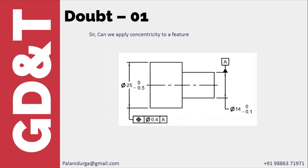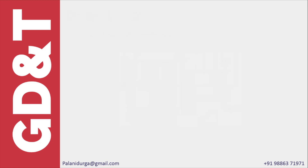The advantage of using positional tolerance is that for the geometrical tolerance value, if you want coaxial control but don't want MMC or LMC, you can avoid them. But if you want flexibility, you can consider providing MMC and LMC for the geometrical tolerance value part of the feature control frame.